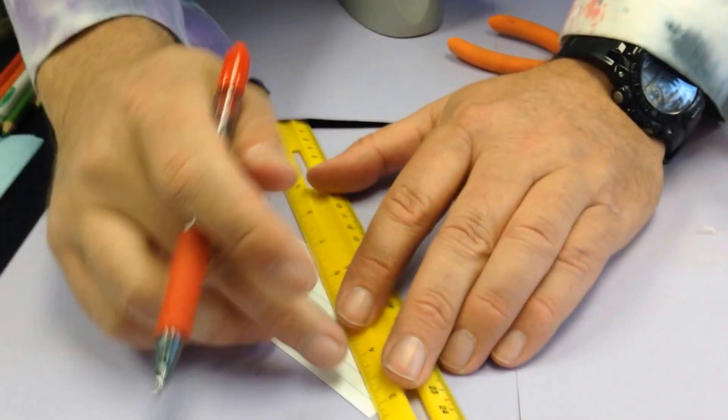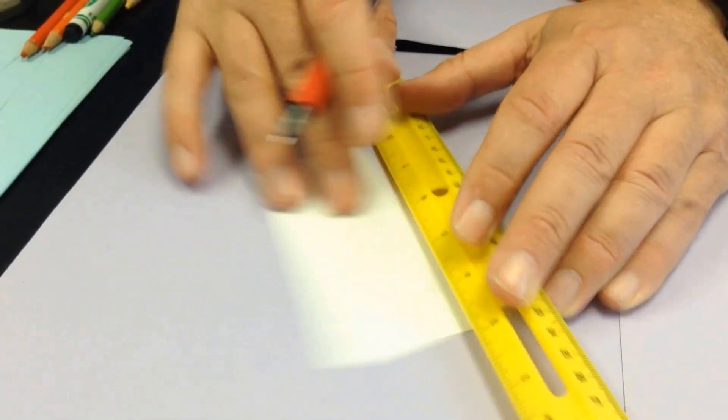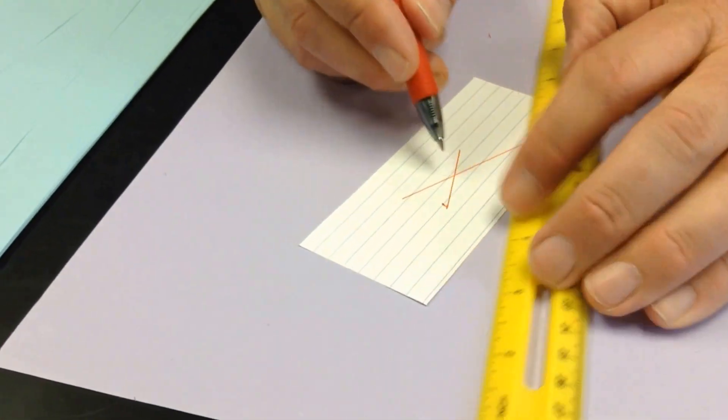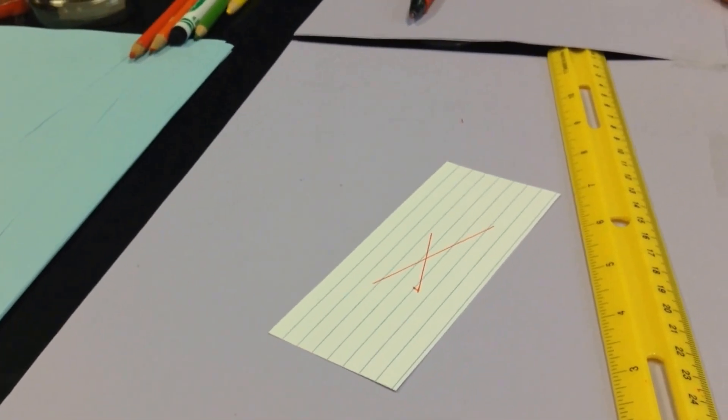Take a ruler, put the ruler corner to corner. So from a diagonal corner to the other diagonal corner, you're going to draw a line roughly in the middle. Do the same from the other two corners and right there is the center of that rectangle.